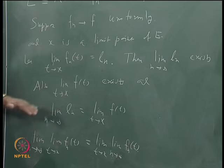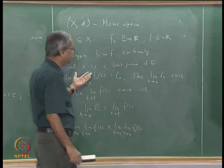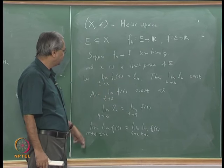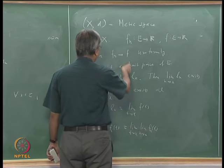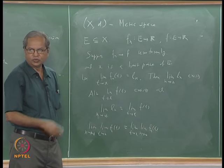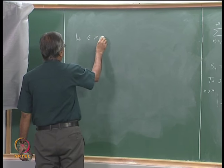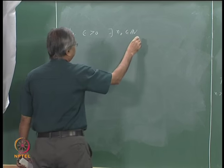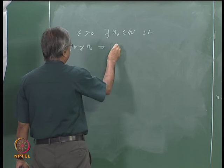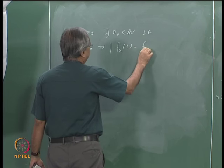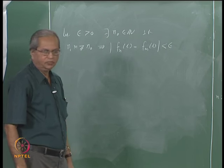To prove this, first we show that l_n converges, i.e., lim_{n→∞} l_n exists. Since l_n is a sequence of real numbers, it suffices to show it is Cauchy. Since f_n converges to f uniformly, it is also a uniformly Cauchy sequence. Given epsilon greater than 0, there exists N_0 such that for all n and m greater than or equal to N_0, |f_n(t) - f_m(t)| < epsilon for every t in E.